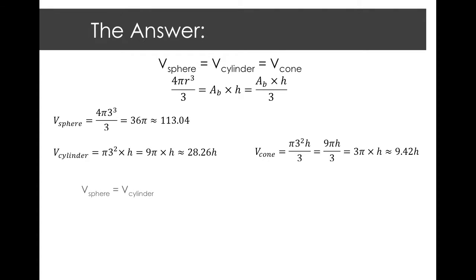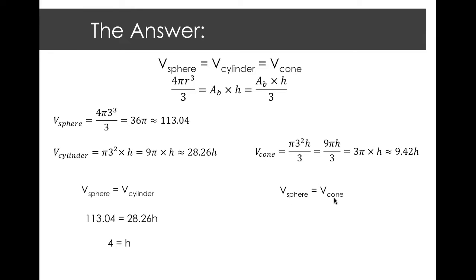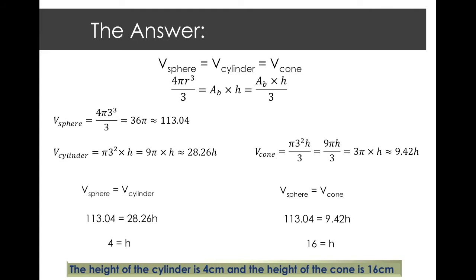Remember, all volumes are equal. So if we make the volume of the sphere equal to the volume of the cylinder, we know everything about the sphere but are missing the height of the cylinder. So we have 113.04 equals 28.26 times the height, giving us h equals 4. Same thing with the cone — we set it equal to the sphere's volume, divide both sides by 9.42, and we get h equals 16. So in conclusion, the height of the cylinder is 4 centimeters, and the height of the cone is 16 centimeters.